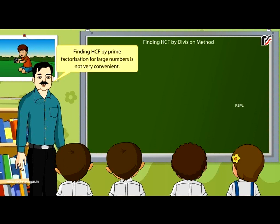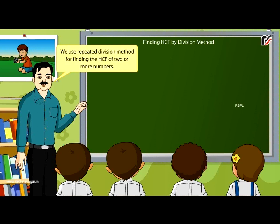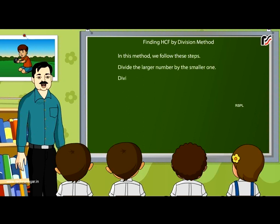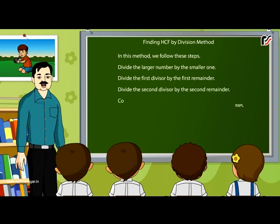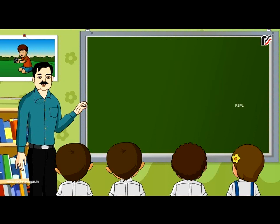Finding HCF by Division Method: For large numbers, prime factorization is not very convenient. The method of long division is more useful. We use repeated division: divide the larger number by the smaller one; divide the first divisor by the first remainder; divide the second divisor by the second remainder; continue until the remainder becomes 0. The last divisor is the required HCF.